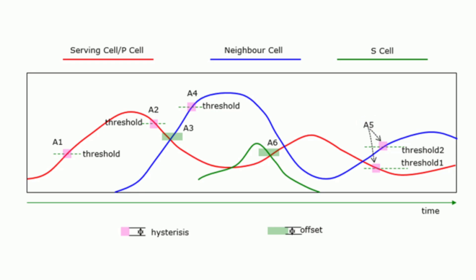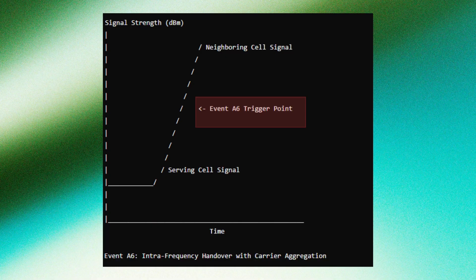Event A6. Specific to intra-frequency handovers with carrier aggregation, triggered when a neighboring cell becomes offset better than the serving cell. Introduced in Release 10 for Carrier Aggregation, CA.